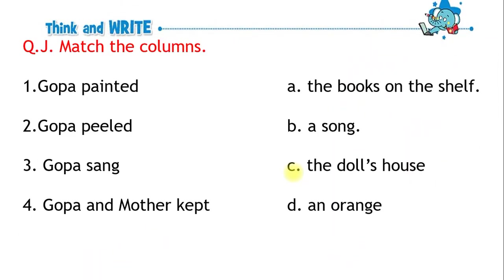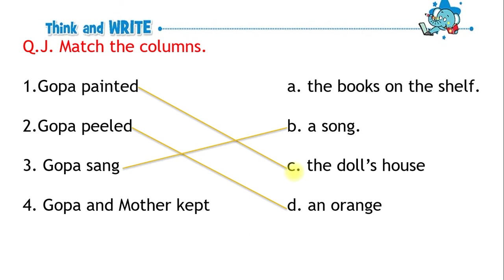Match the columns. Goppa painted the doll's house. Goppa peeled an orange. Goppa sang a song. Goppa and mother kept the books on the shelf.